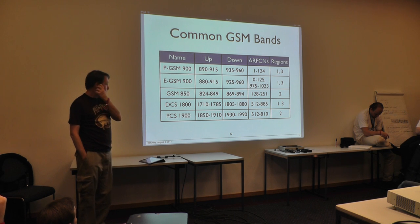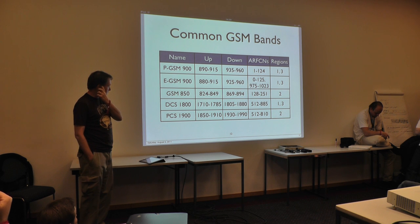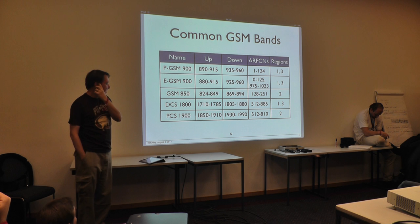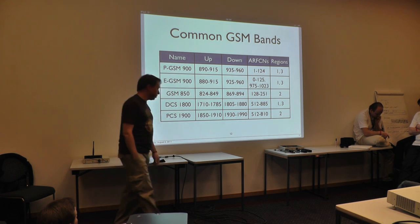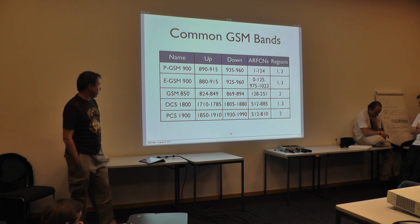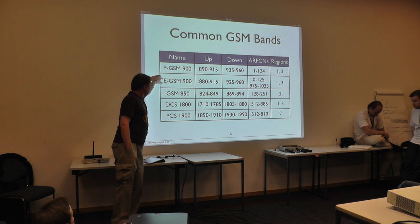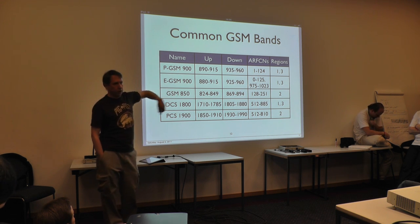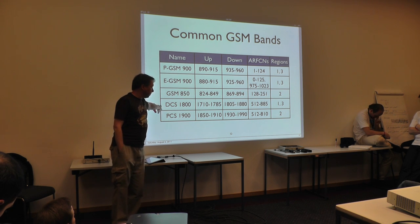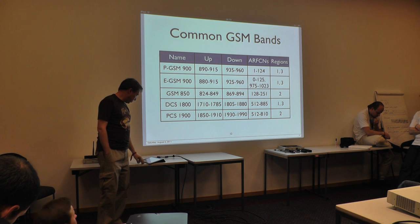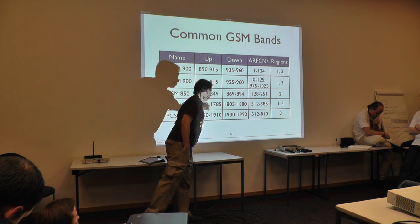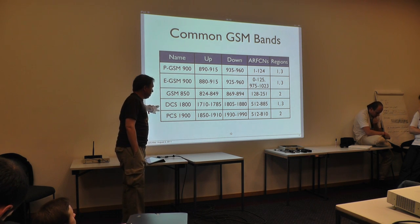These are the common GSM bands worldwide. ITU Region 1 covers Europe and Asia; ITU Region 3 covers Africa and the Middle East; ITU Region 2 covers the Americas. In most parts of the world, the standard GSM bands are PGSM 900 and DCS 1800 — the GSM test networks running at this conference use DCS 1800. In North America, it's GSM 850 and PCS 1900. The duplexing offsets in the high bands are larger than in the low bands.